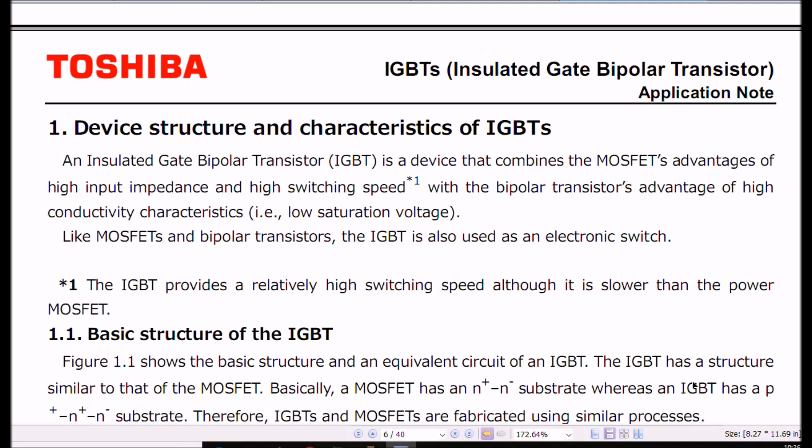Toshiba should be noted is one of the world's premier manufacturers of semiconductors including IGBTs. An insulated gate bipolar transistor IGBT is a device that combines the MOSFET's advantages of high input impedance and switching speed. As the note says here, the switching speed is not as great as MOSFETs, with a bipolar transistor's advantage of conductivity characteristics, that is low saturation voltage. Like MOSFETs and bipolar transistors, the IGBT is also used as an electronic switch.